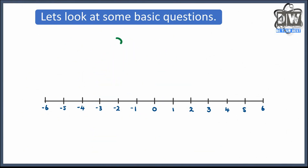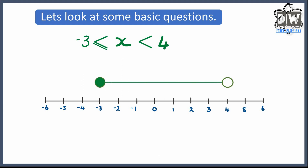Last one before we move into the quiz. We've got x is bigger than or equal to minus 3 and smaller than 4. So: a shaded circle on minus 3 because it's equal to, an unshaded circle on 4 because it's not equal to, and put a line in between. As simple as that.